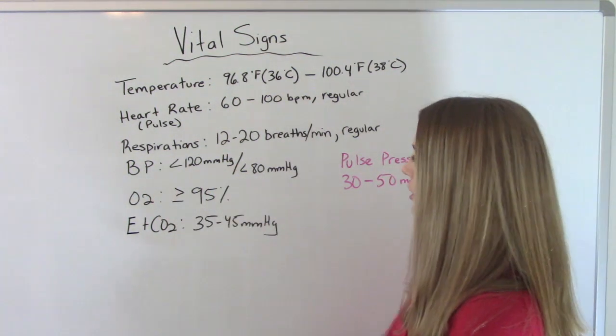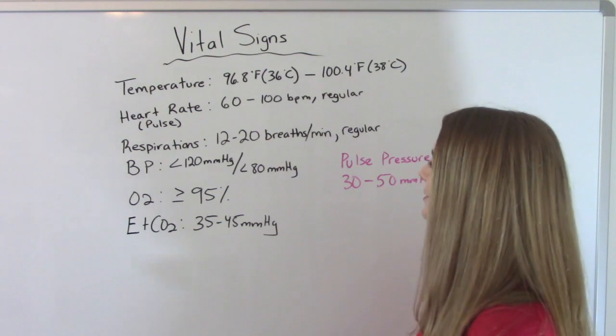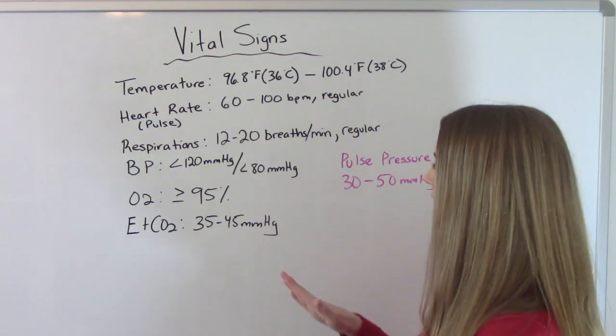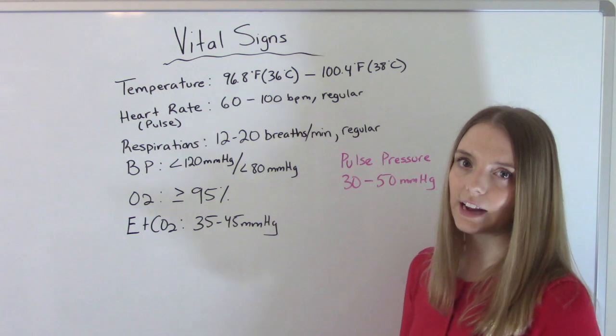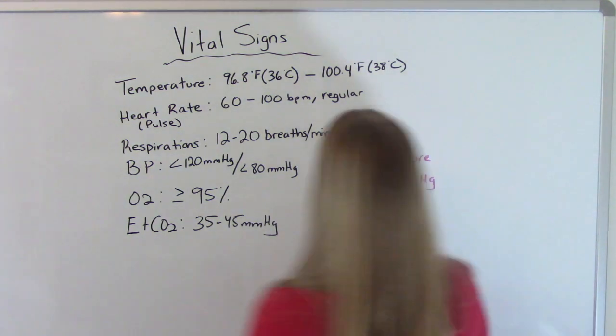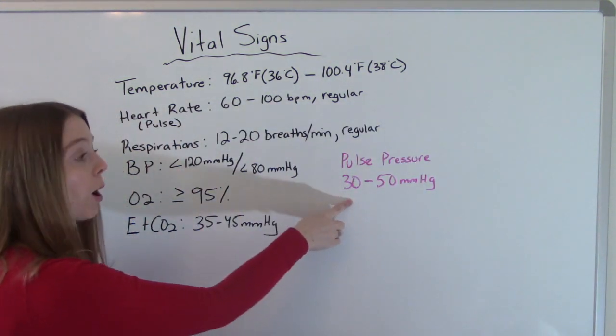Your blood pressure can be anywhere between 120 and below for your systolic or 80 and below for your diastolic. And then I wanted to point out what this is, your pulse pressure.